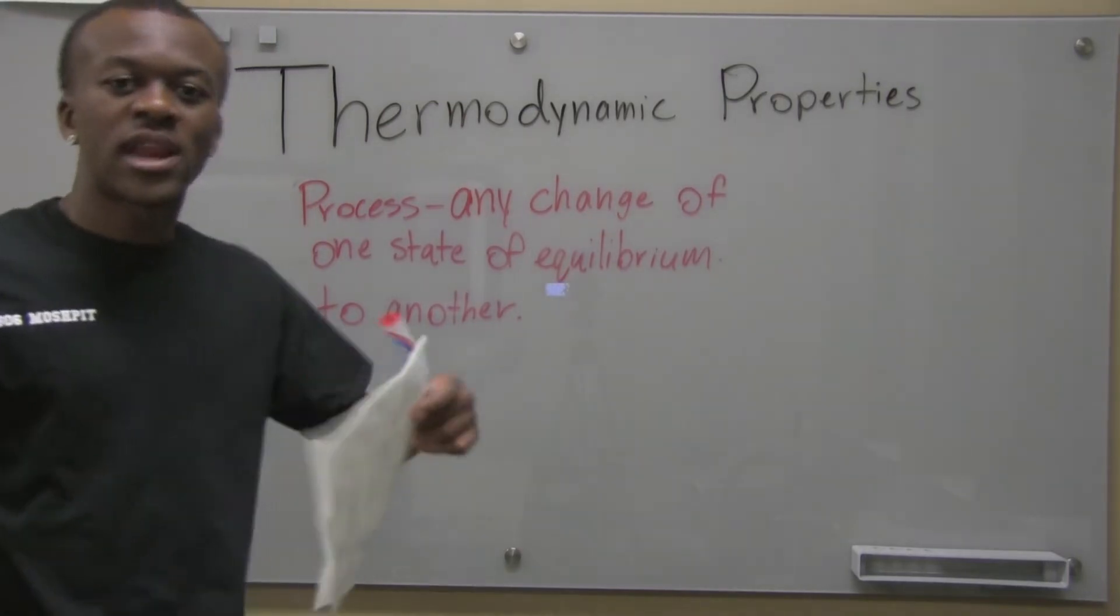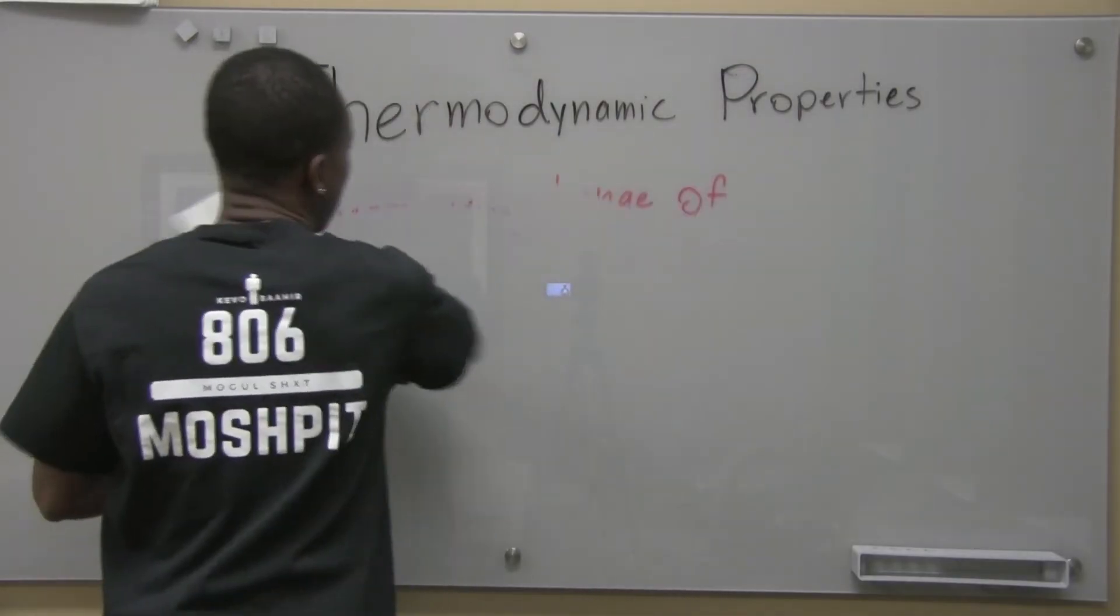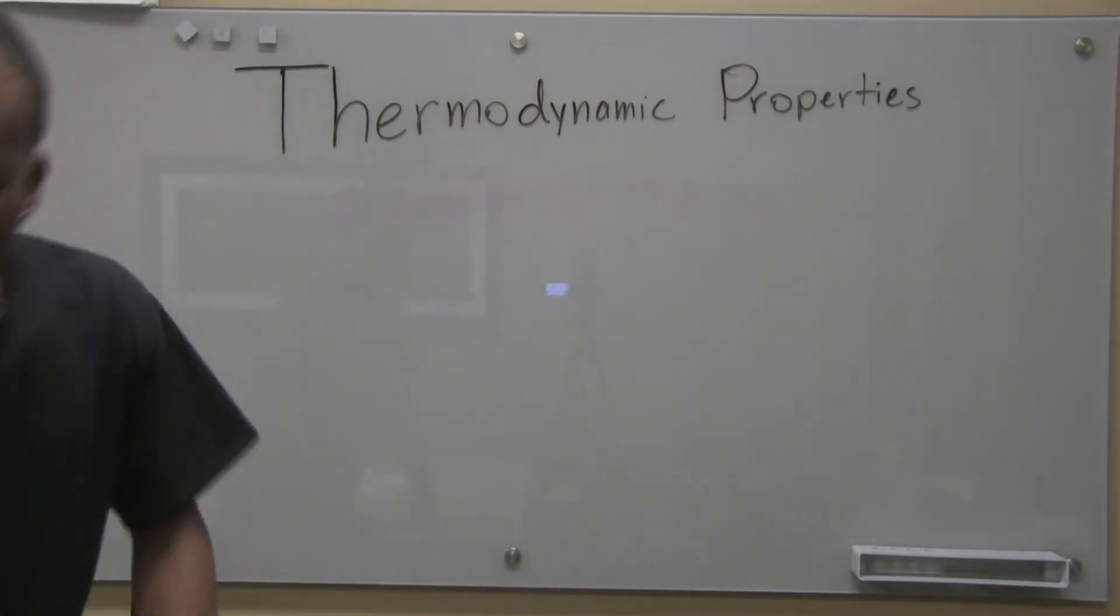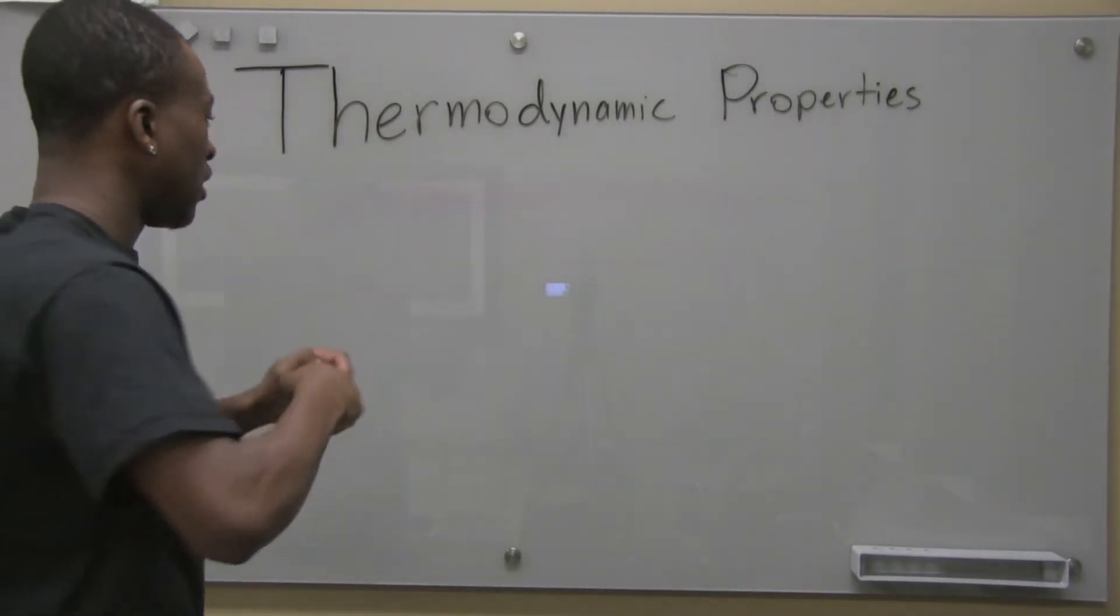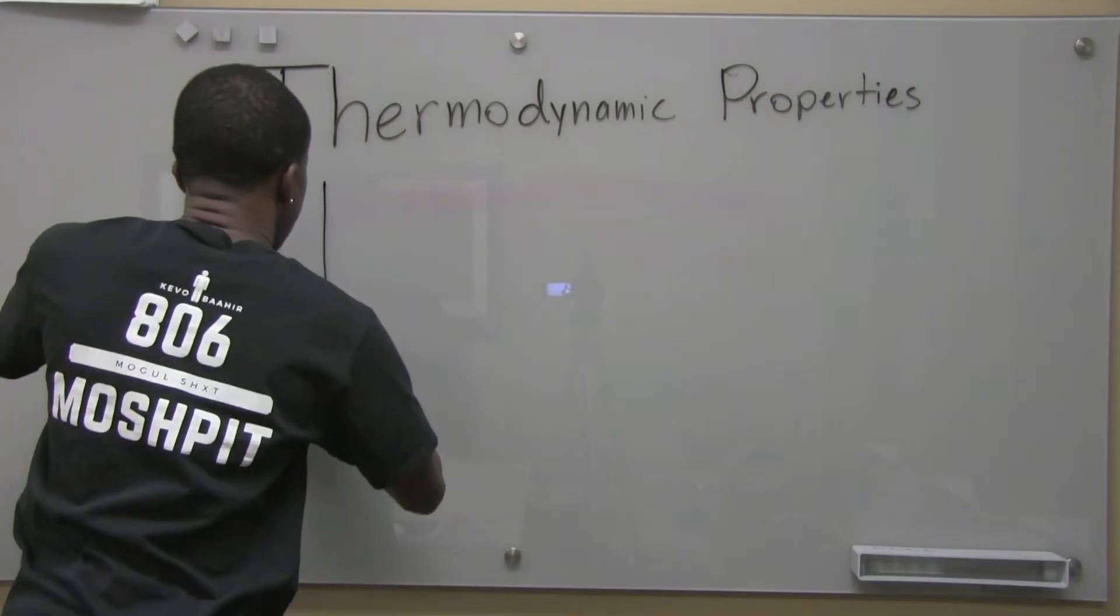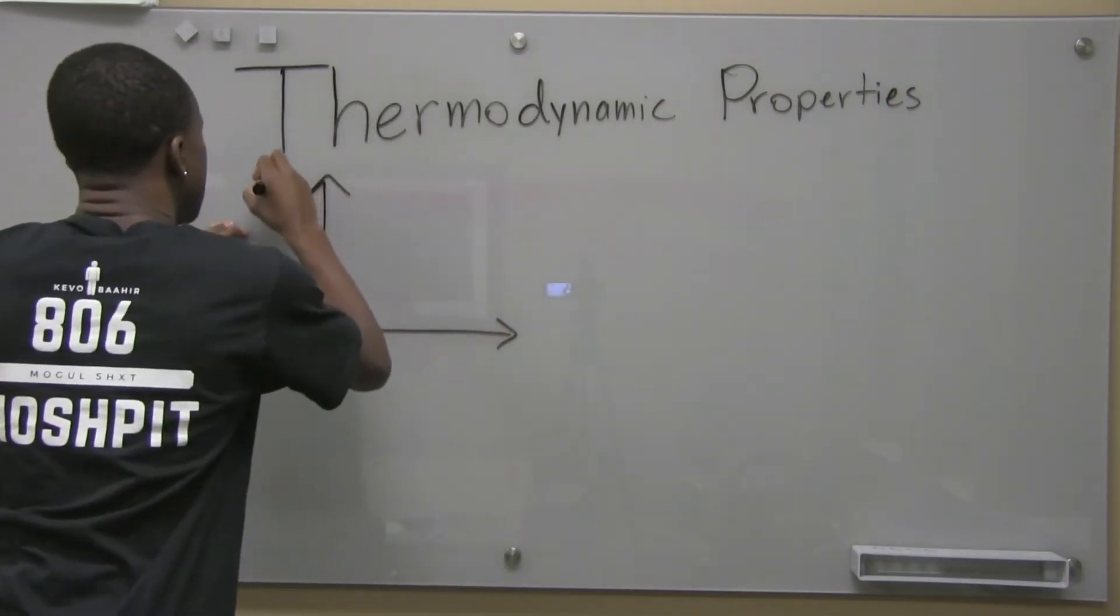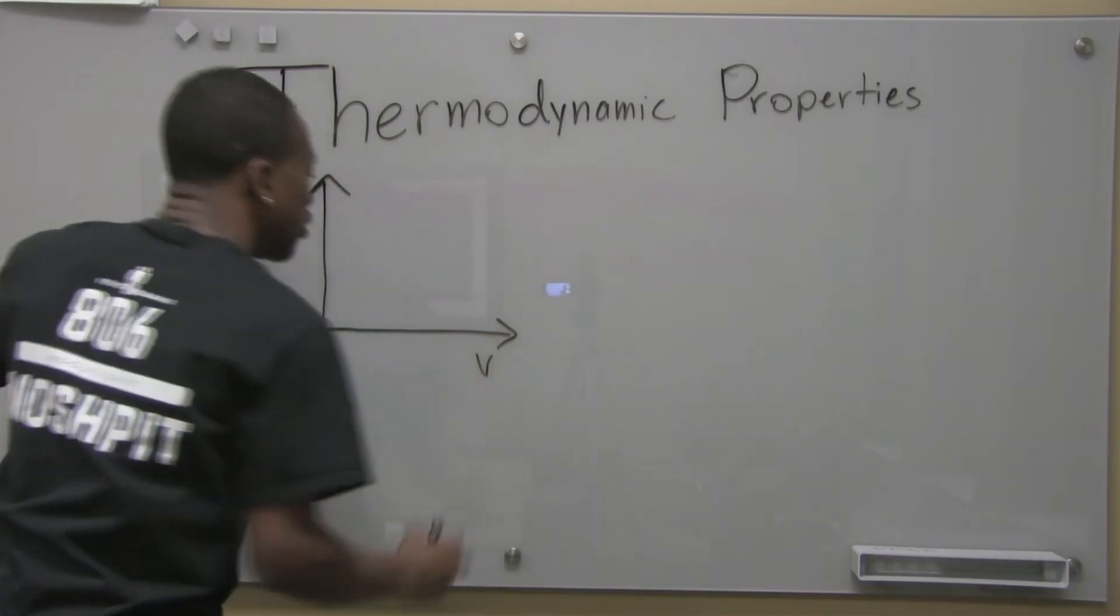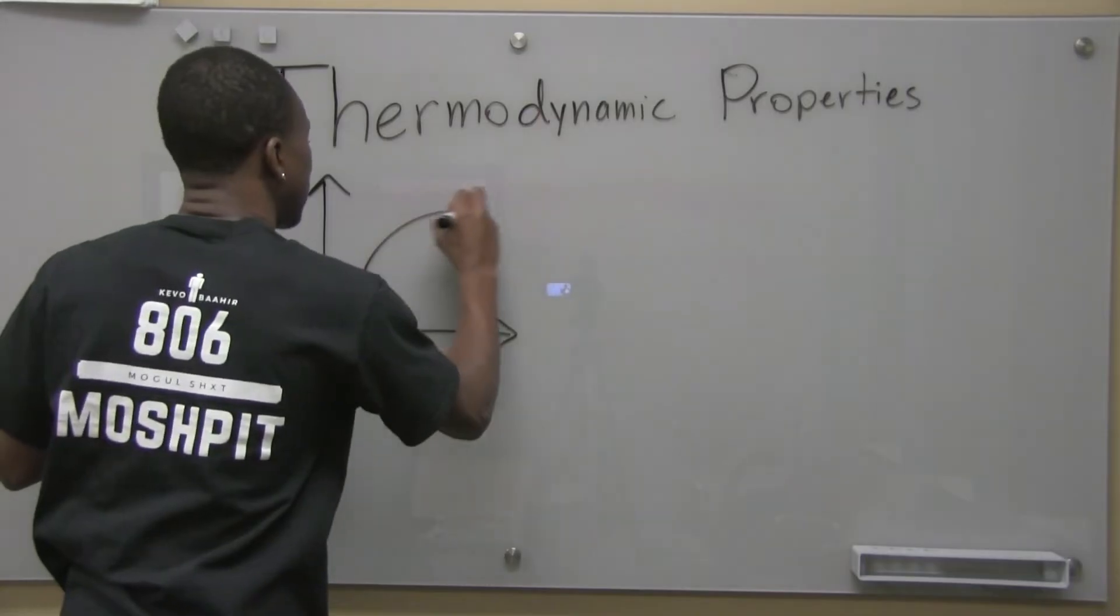Now, in thermodynamics, we deal with graphs a lot. So how do we represent a process on a graph? Now, we have to be very careful about how we do things like this. So let's say I wanted a... There's something called a PV diagram, right? P meaning pressure, V meaning volume. So let's say I'm going from one state to another state in this PV diagram. This denotes my process.